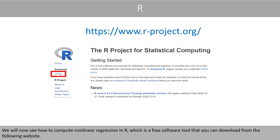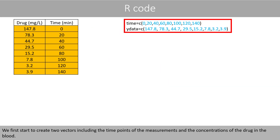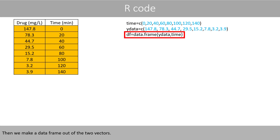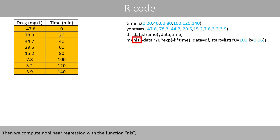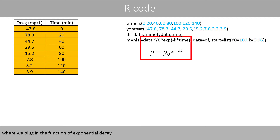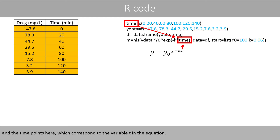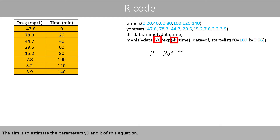We will now see how to compute nonlinear regression in R, which is a free software tool. We first create two vectors including the time points for the measurements and the concentrations of the drug in the blood. Note that the names of the vectors are decided by the user. Then we make a data frame out of the two vectors, and compute nonlinear regression with the function NLS, where we plug in the function of exponential decay. We put the y data on the left-hand side of the equation and the time points corresponding to the variable t. The aim is to estimate the parameters y0 and k.